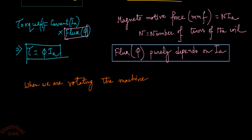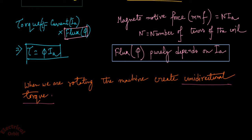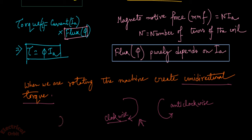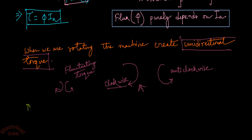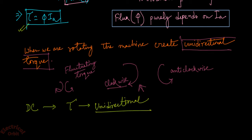When we try to rotate the machine, we need to create unidirectional torque. Unidirectional torque means torque that tries to rotate the motor in one particular direction — whether clockwise or anti-clockwise — it must remain in one direction. If the torque fluctuates, reversing direction each cycle, we get a fluctuating torque that will not be able to rotate the motor. When we supply DC, the torque is obviously unidirectional because DC does not change phase with time.